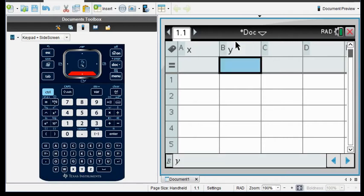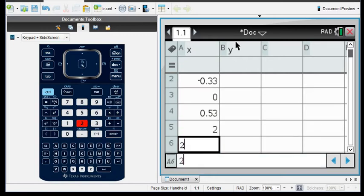For X, I have negative 1, negative 0.33, 0.53, 2, and 2.7.